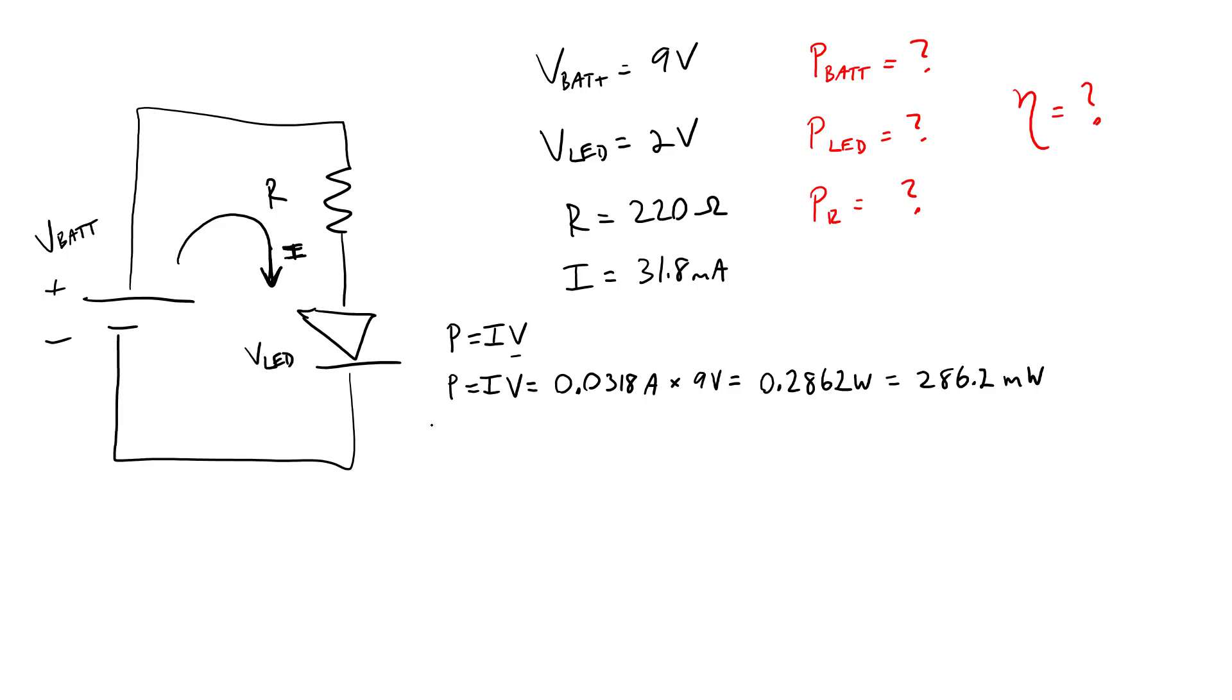Moving on to the resistor, we can use P equals IV. But for a resistor, you can also substitute Ohm's law, V equals IR, into this equation to write it in two different forms. It can also be P equals I squared R or P equals V squared over R. So you can just use whichever one of these you think is the most convenient, depending on the variables you already know.